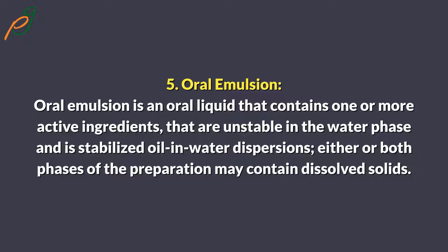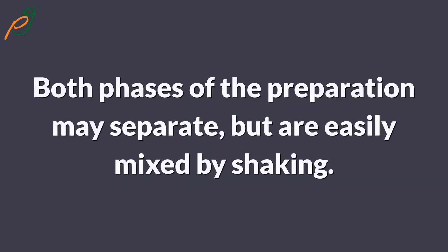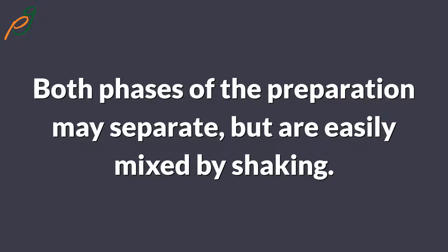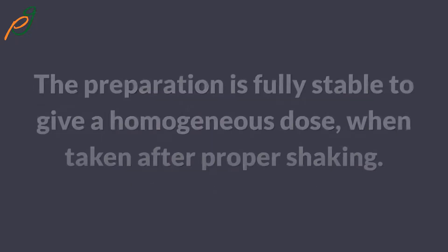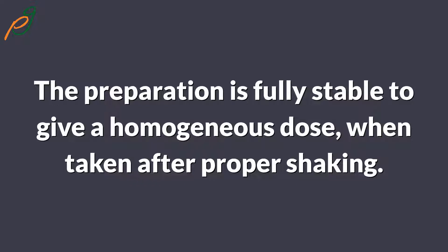Oral emulsion is an oral liquid that contains one or more active ingredients that are unstable in the water phase, and is stabilized as oil-in-water dispersions. Either or both phases of the preparation may contain dissolved solids. Both phases may separate but are easily mixed by shaking, and the preparation gives a homogeneous dose when taken after proper shaking.